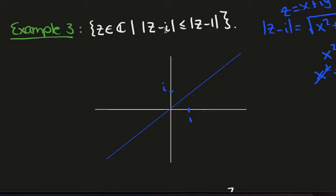And looking at it, we want to look at all the points that are closer to i than they are to 1. And so i is obviously there, so we want to be in this half space. And we include the boundary. We include that because there's a less than or equal to.